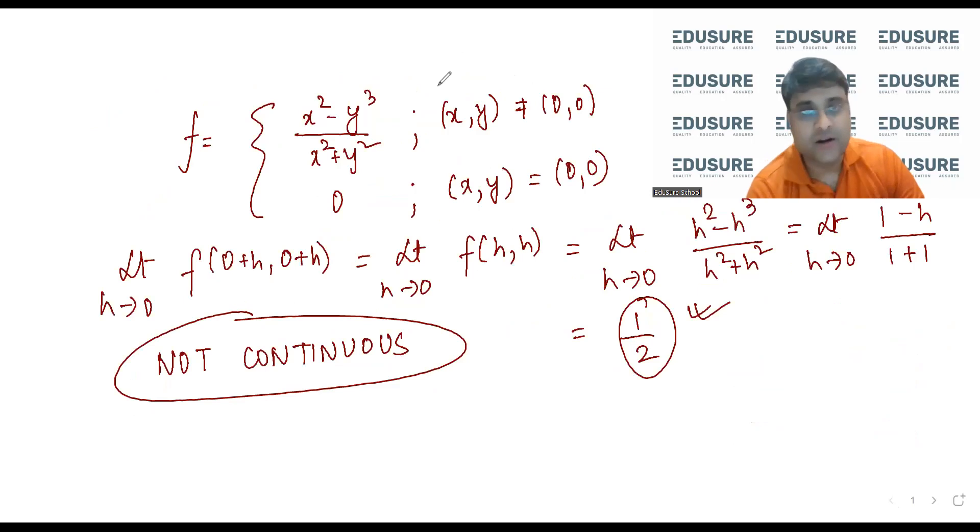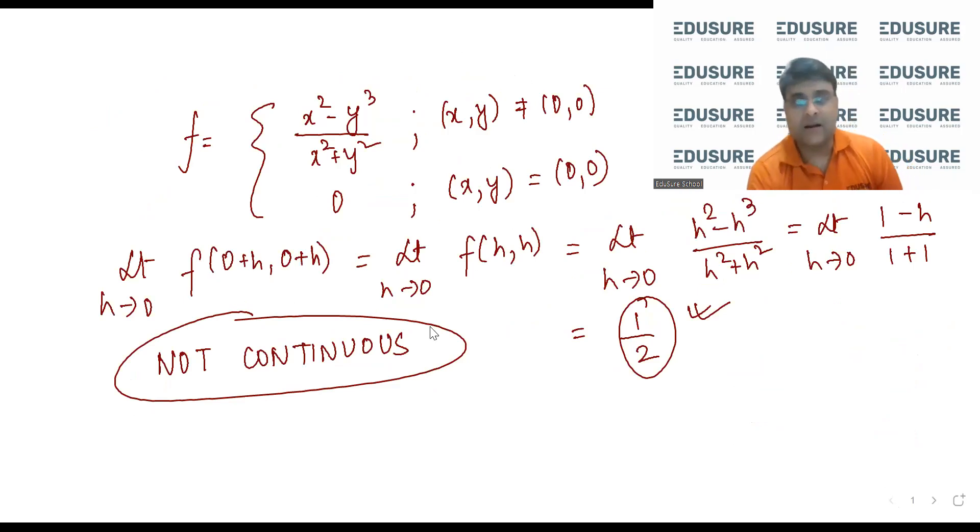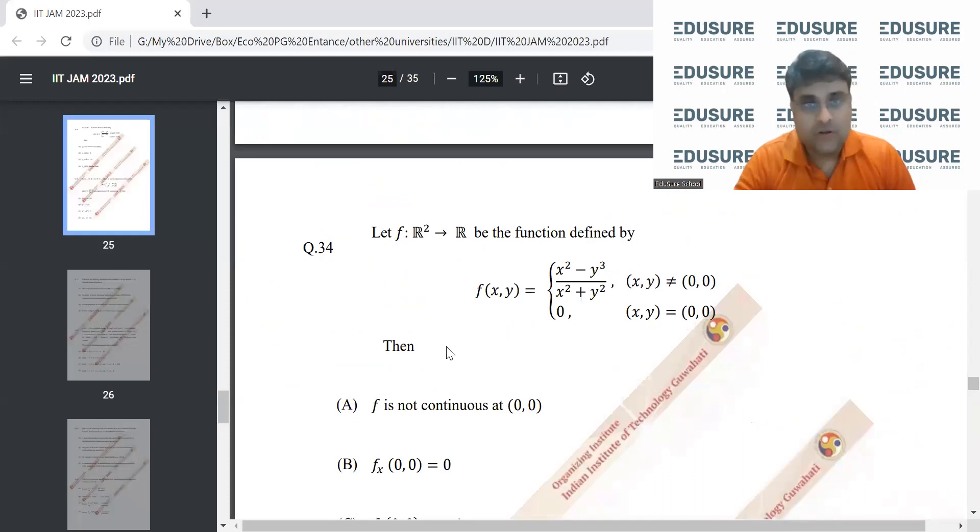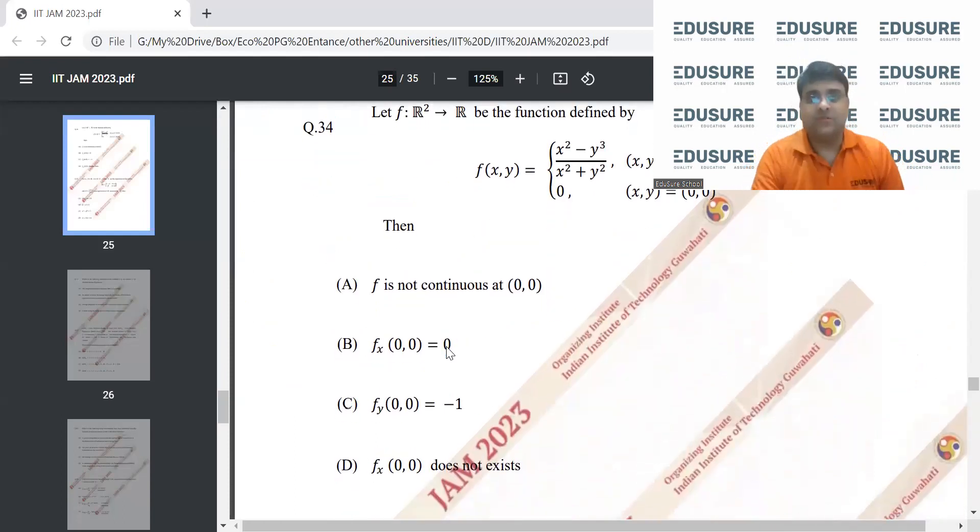The partial derivative of x at (0,0) limit doesn't exist and the function is not continuous. Now if we know all these we should be able to mark our answer for this one. So the answer is: f is not continuous, minus 1, fx does not exist. a, c and d is the answer.